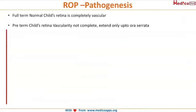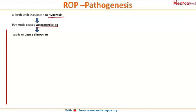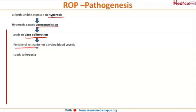In the pathogenesis, the retina of a full-term normal baby is completely vascularized. However, in a premature baby the retina is not completely vascularized — it is only vascularized up to the ora serrata, meaning there is incomplete vascularization. When this baby is born and exposed to increased oxygen levels in the NICU, the baby is in a relative state of hyperoxia. Hyperoxia causes vasoconstriction, which leads to vaso-obliteration, so the peripheral retina does not develop blood vessels, ultimately leading to hypoxia.